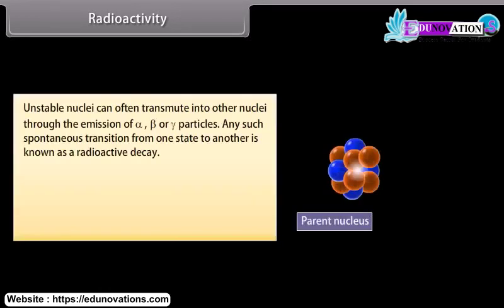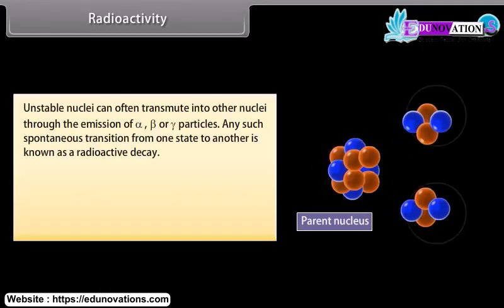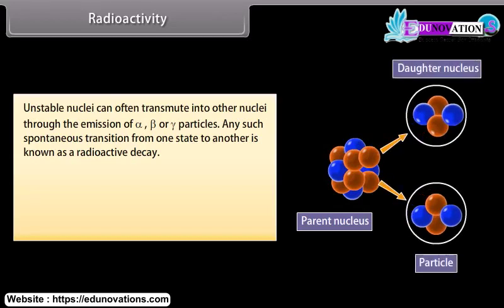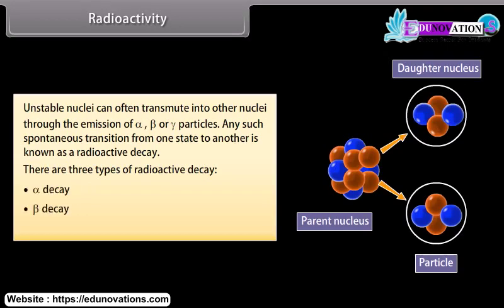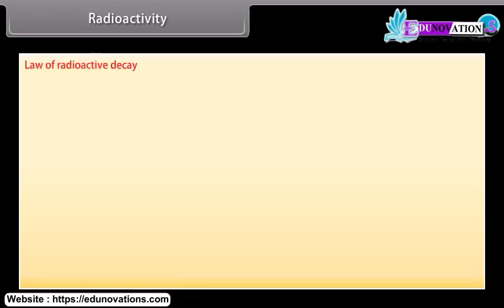Radioactivity: Unstable nuclei can often transmute into other nuclei through the emission of alpha, beta, or gamma particles. Any such spontaneous transition from one state to another is known as radioactive decay. There are three types of radioactive decay: alpha decay, beta decay, and gamma decay.